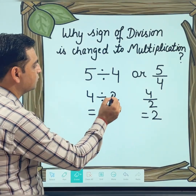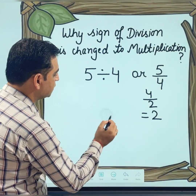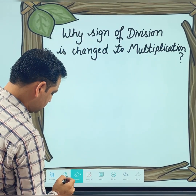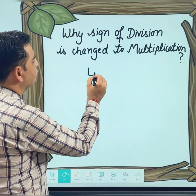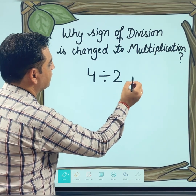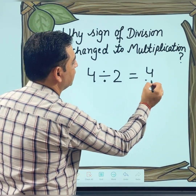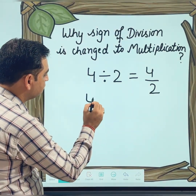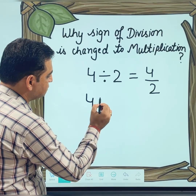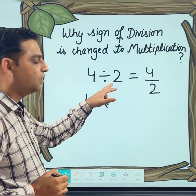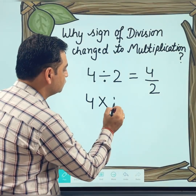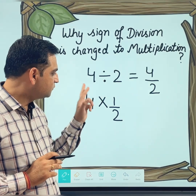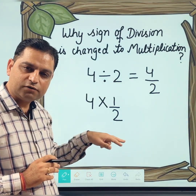Now, coming to the next point. As I said, 4 divided by 2 can be written as 4 over 2 — and we all agreed to that. Now let's suppose I do the division but change the division sign into multiplication and write 2 as 1 over 2. Think very carefully. This division sign is changed into multiplication and 2 becomes 1 over 2.